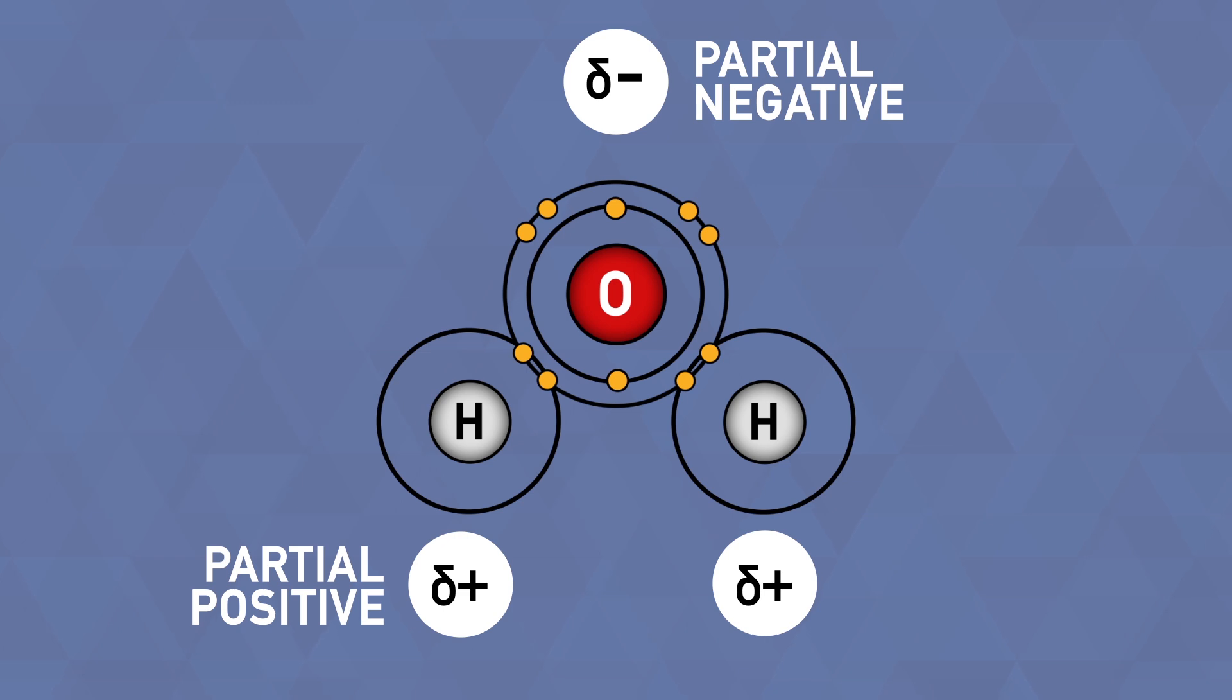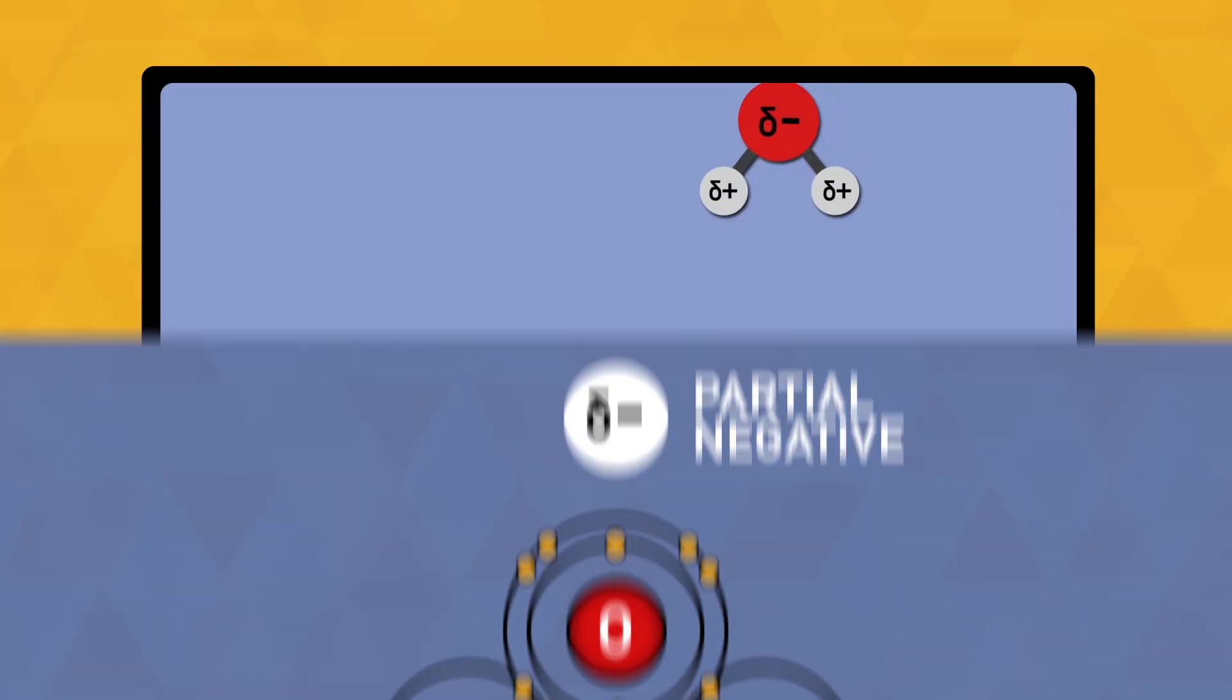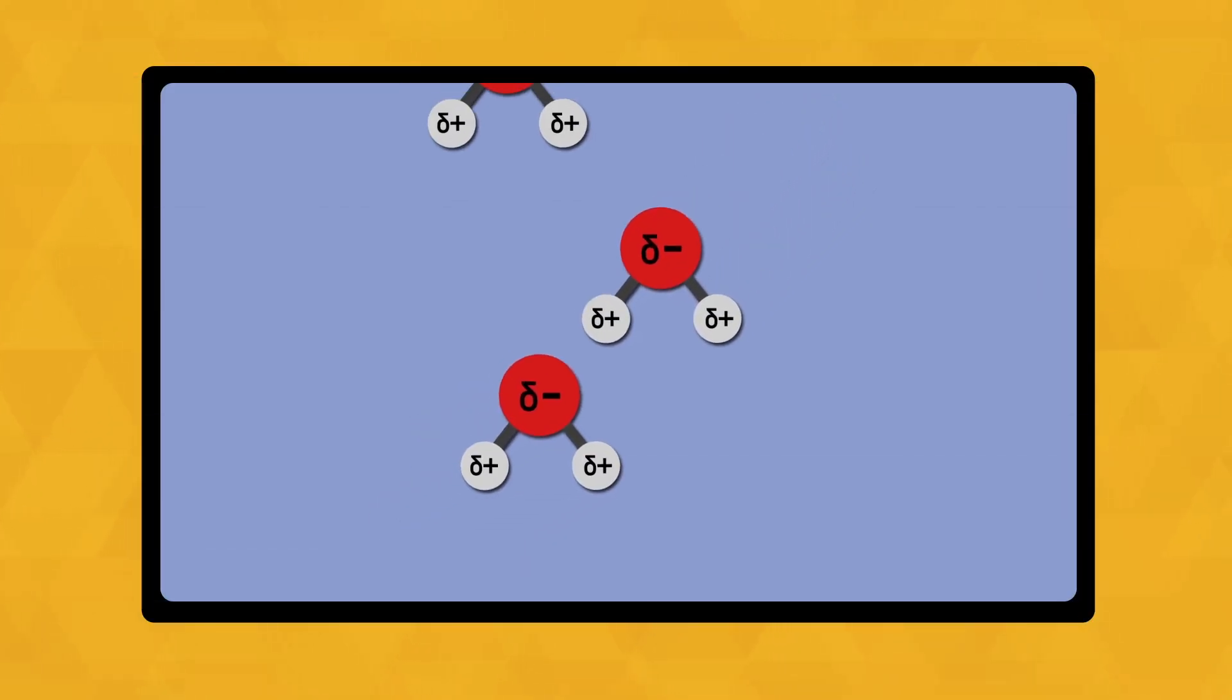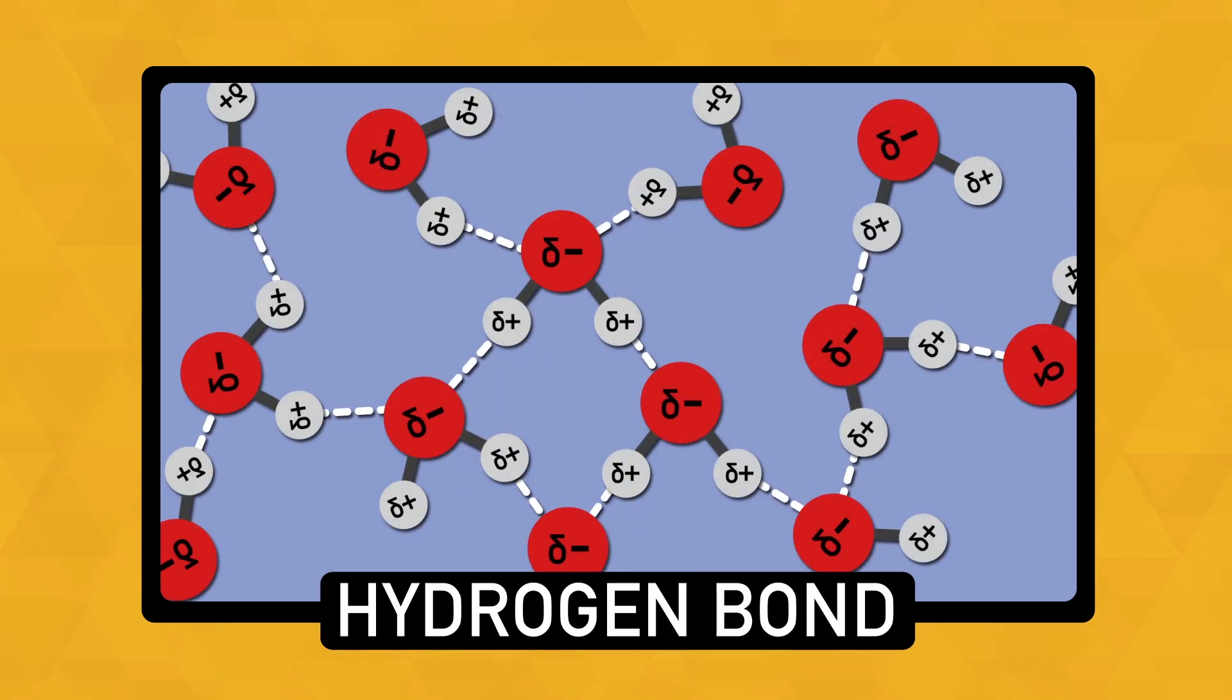These partial charges create a positive end and a negative end to the molecule, making it what chemists call polar. The opposite charges of these polar molecules are attracted to each other, causing them to loosely stick together. The attractions between the water molecules are called hydrogen bonds.